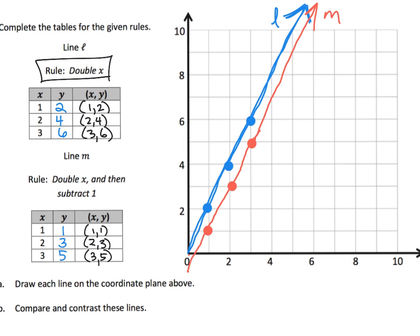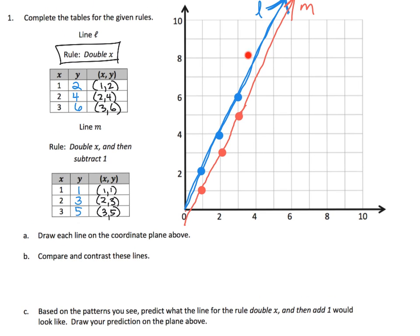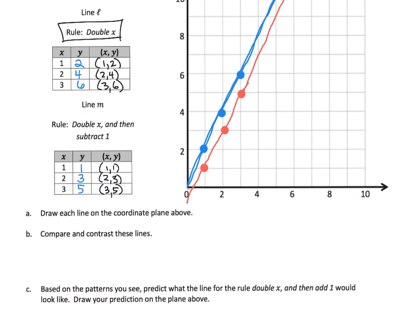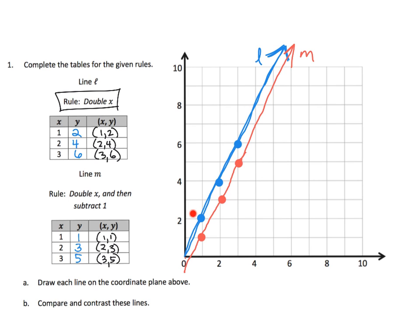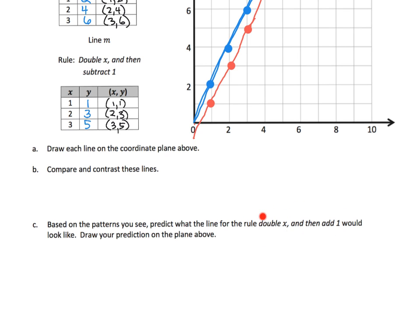How would we compare these lines? Well, they're parallel — they have the same slant, the same steepness, the same slope. But why is the red line lower than the blue one? We want students to say: it's because it takes that original home line and lowers it by one — it shifts it down by one — because we are subtracting by one. So what would we predict the 'double x add 1' rule would look like?